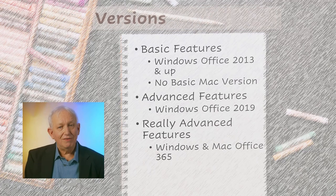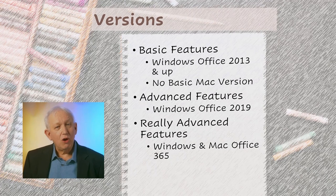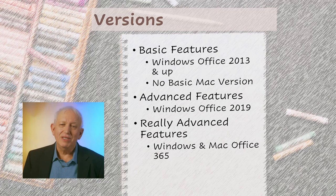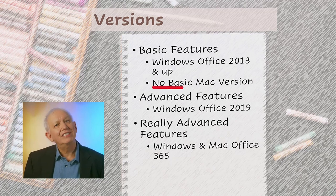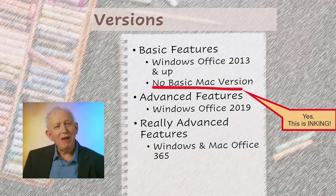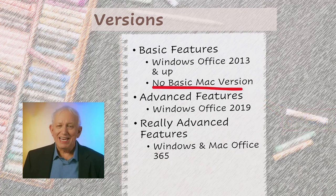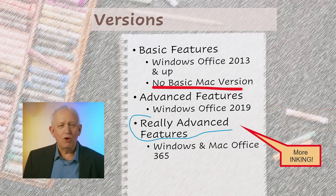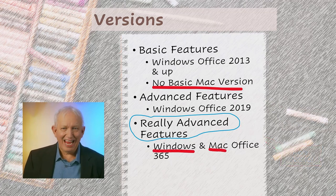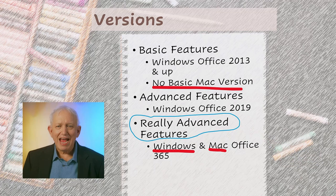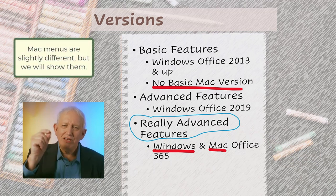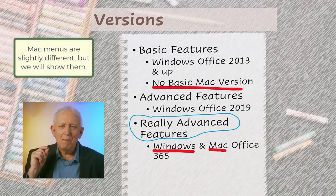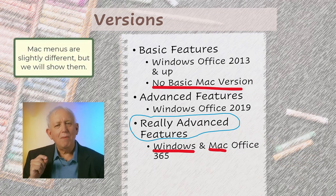First off, the tool got started with basic capabilities in Office 2013 for Windows only — no Mac version. There were some additional features added in Office 2019, but inking took full form with Office 365 for both Mac and Windows. For the Mac, there are a few small menu differences, but all the features are there on both platforms.